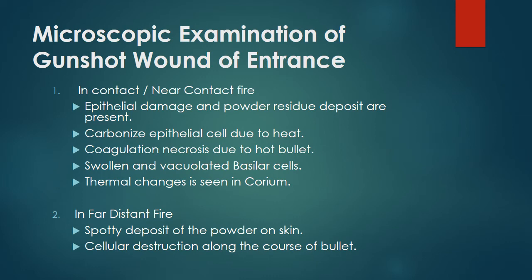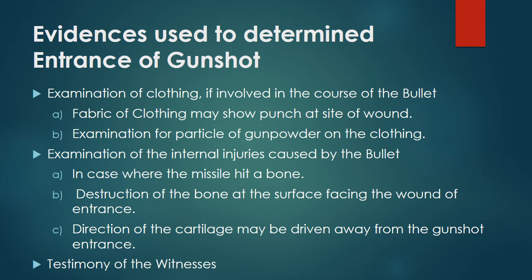These are matters of reading and enumeration — refer to your book. Evidences used to determine the entrance of a gunshot: examination of clothing if involved in the course of the bullet, the fabric may show a punch at the site of the wound; examination for particles of gunpowder on the clothing; examination of internal injuries caused by the bullet. In case the missile hit a bone, there is destruction of the bone surface facing the wound of entrance, and cartilage may be driven away from the gunshot entrance. Testimony of witnesses is also important.